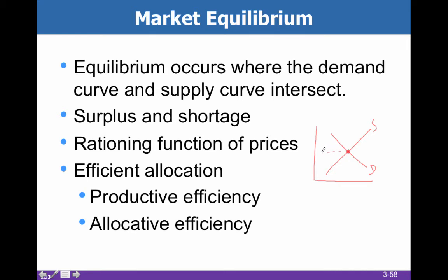At this price, the suppliers want to supply this quantity and the demanders want to demand that quantity. So everything that is supplied is demanded — there is no extra and there is no shortage. Price does what we call a rationing function and it gives us efficient allocation. If prices are too high, then people will make fewer of them or buy fewer of them. If prices are low, they're going to have to produce more because people are going to demand it, and the market will just sort of work things out.